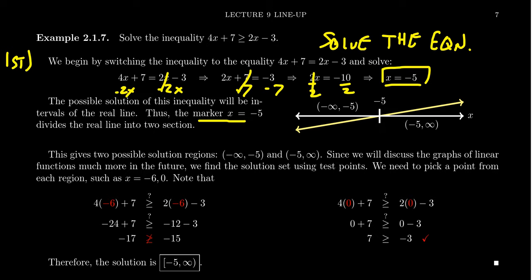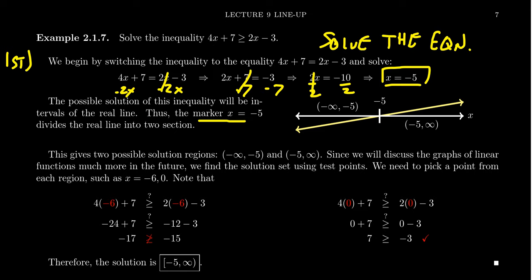We need to investigate which of these intervals belong to the solution set of the inequality. One way to do this is simply to test it. The markers are significant because they're the only places we can switch from being a solution to not being a solution. Every number bigger than negative 5 is either a solution or it's not — it won't change within the interval. So we pick a test point to see who belongs.